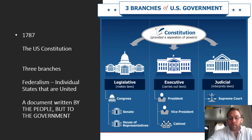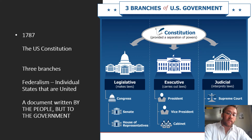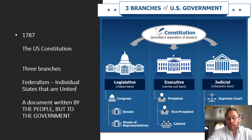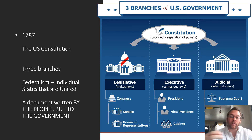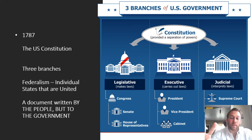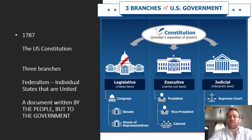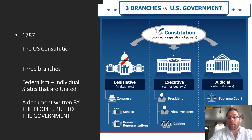The US Constitution introduced some major things that had not been done before. The first is the separation of power — we have three branches of government. The legislative branch makes the laws; this is Congress, held in two houses: the Senate and the House of Representatives. The Senate has two representatives per state. The House of Representatives has a total of 435 members, proportionate to population — each member represents about 700,000 people today.